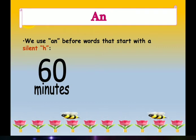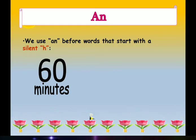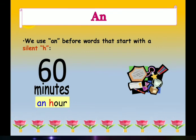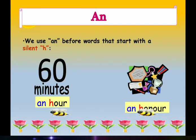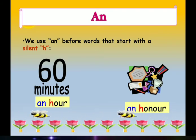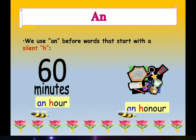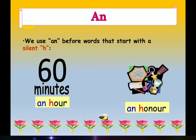The next use of article AN is we use AN before words that start with a silent H. For example: AN HOUR, AN HOURNER. When we are pronouncing these words, the H is silent, so we are pronouncing these words with the vowel sound — AN HOUR, AN HOURNER. Like these other examples: AN HONEST, AN HONORABLE. So before all these words we will use article AN because they are starting with the vowel sound.